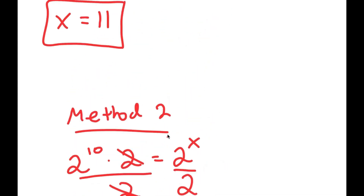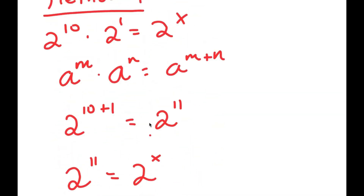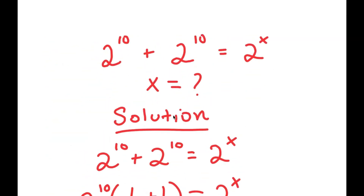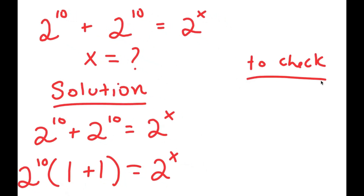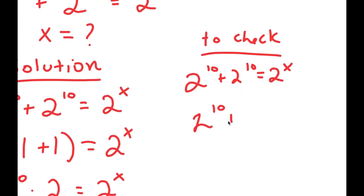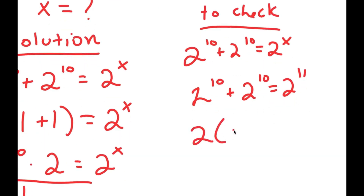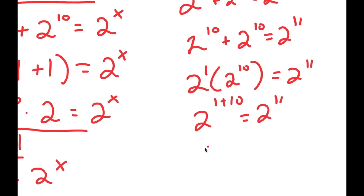Both methods give x equals 11, though Method 1 is simpler, taking only a couple of steps. The final step is to check our answer: substituting back, 2 to the power of 10 plus 2 to the power of 10 equals 2 to the power of 11. Two copies of 2 to the power of 10 is 2 times 2 to the power of 10, which is 2 to the power of 1 times 2 to the power of 10, equaling 2 to the power of 11. Confirmed.